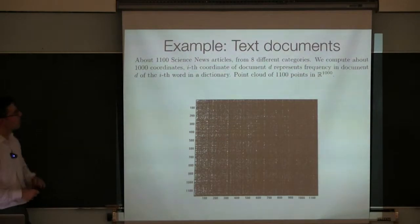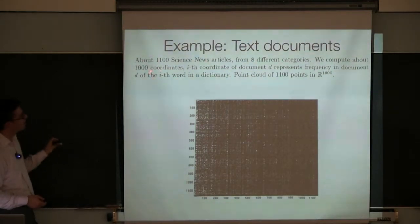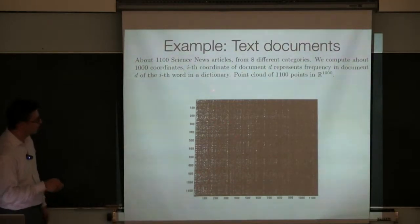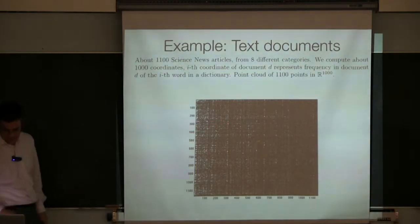And so we pick text documents from Science News, that's a scientific magazine, and we have about 1,000 text documents. We pick a dictionary of about 1,000 words and we get the matrix where each column is a document and the k-th entry is the frequency of the k-th word in that document.